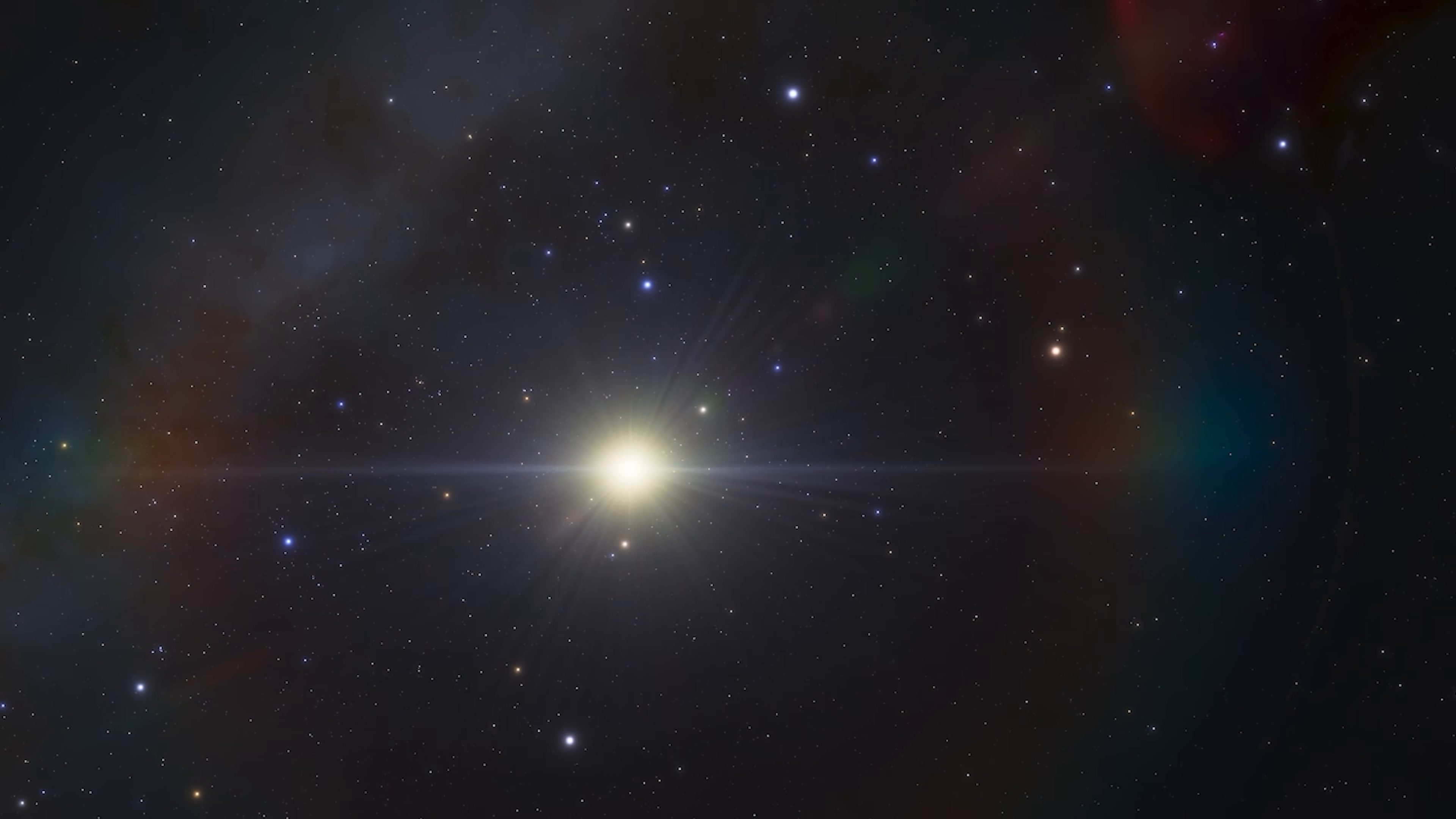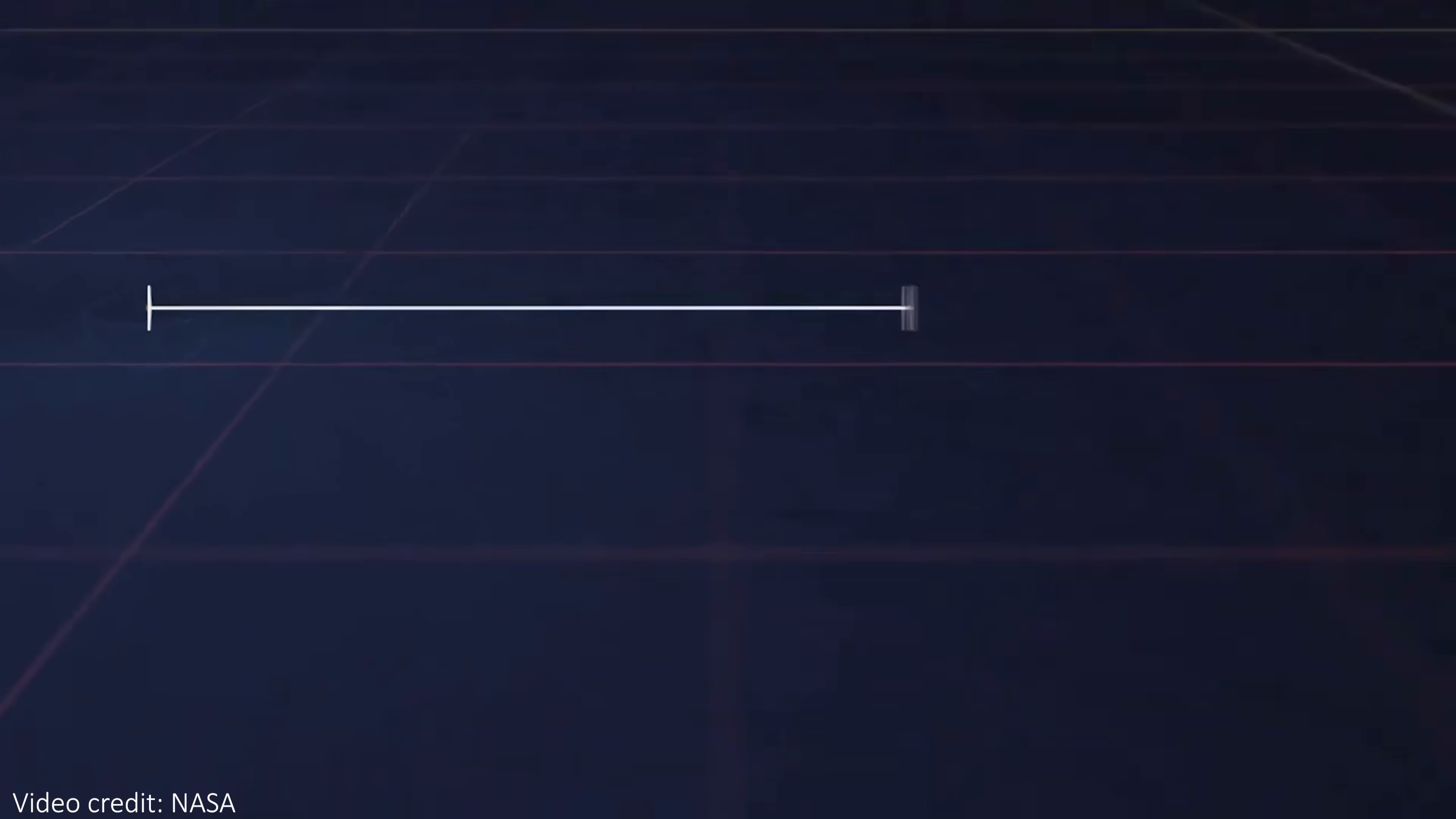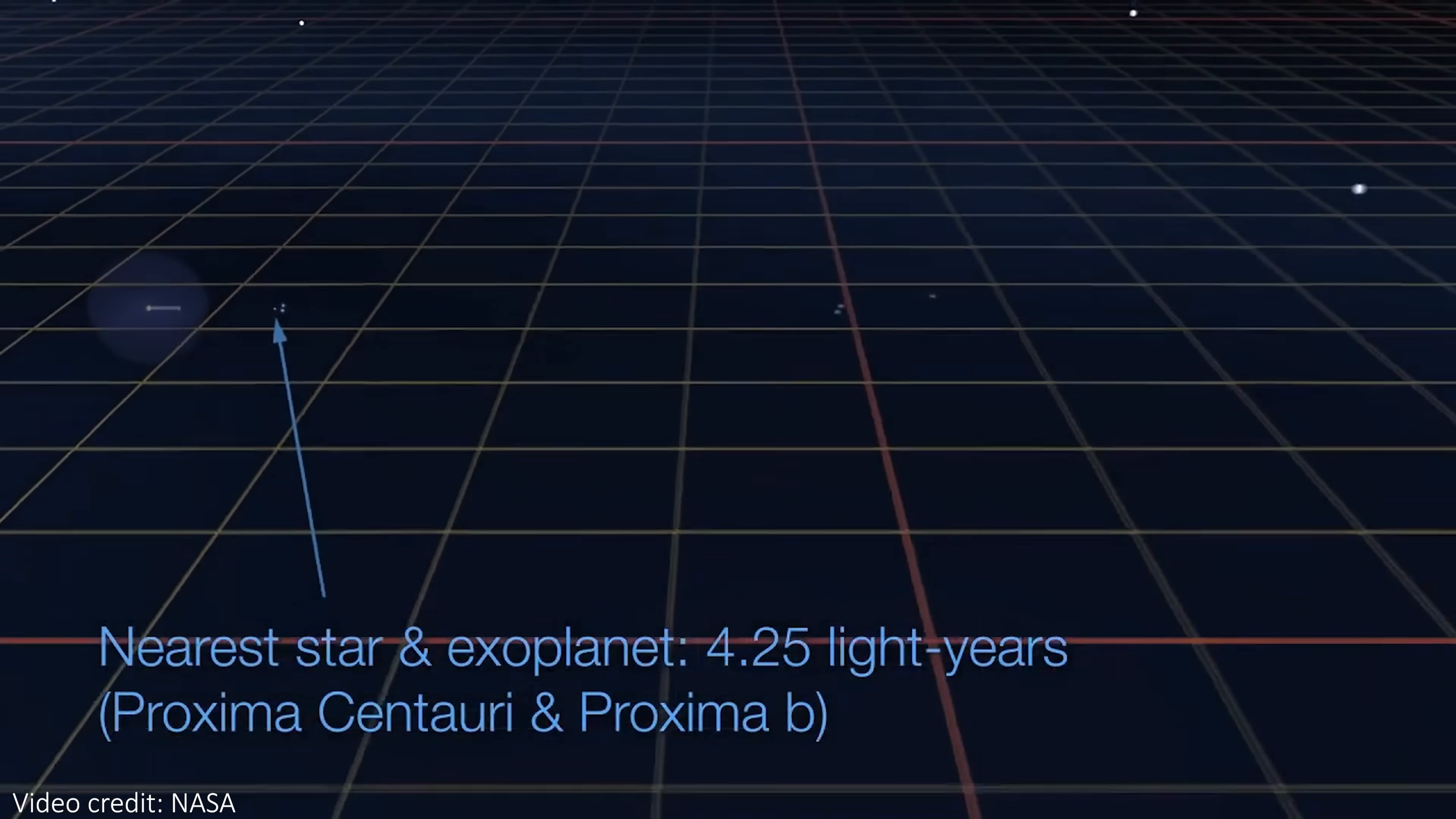The next nearest star to us, after the Sun, is called Proxima Centauri, and that is 4.16 light years away. Any Proximans? I think that's what I'm going to call them, would see us as we were 4 years ago. Now it is starting to get interesting.